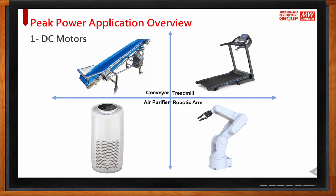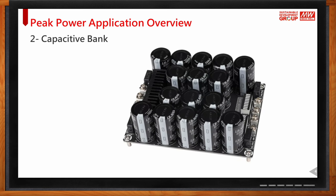That huge startup current forces the power supply into overload protection. Customers have two solutions: purchase a power supply with a higher power rating, or purchase a power supply with peak power capability. Capacitive banks at startup also require huge current, similar to motors, because the internal resistance of the capacitors is very low at startup — requiring huge current and power, which causes the power supply to trigger overload protection and shut down.